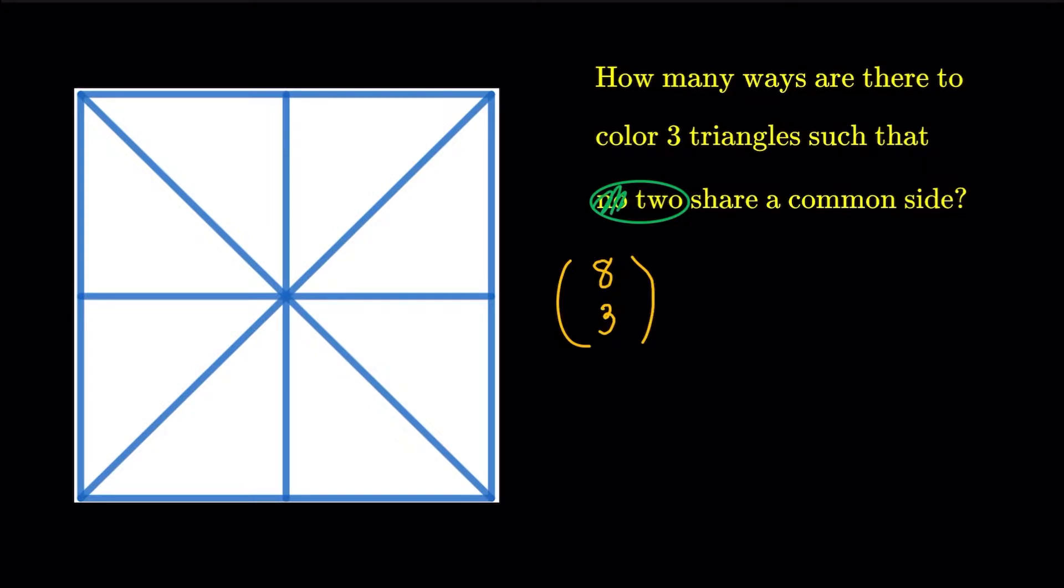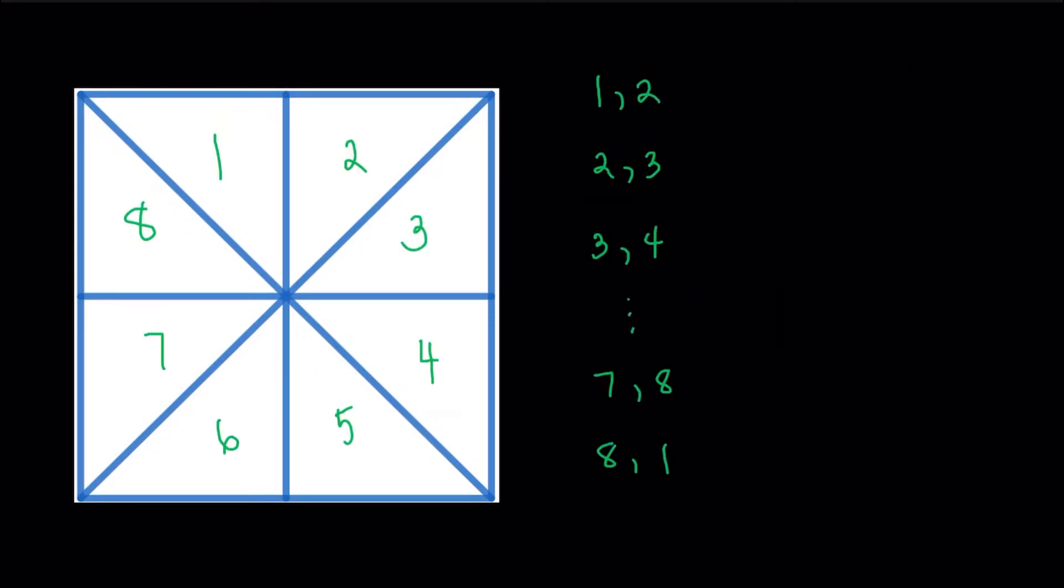I'm going to count how many ways are there to color three triangles such that two of them do share a common side. So I'll remove the case where two triangles are adjacent. Well, I want the two triangles to be adjacent, so I'm going to propose a method here. I'm going to label the triangles clockwise from one to eight. And I'm going to select a pair of triangles that are adjacent. So I have eight possible pairs.